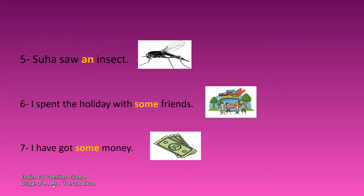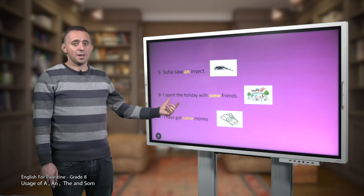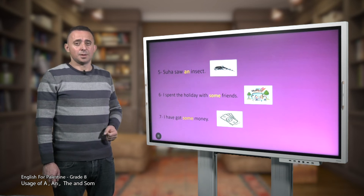Number six: I spent the holiday with some friends. Notice we have the indefinite article 'some', which is followed by a plural noun — 'friends' is a plural noun. Number seven: I have got some money. Here we also have the indefinite article 'some', followed by 'money', which is an uncountable noun. So 'some' can be followed by countable and uncountable nouns.